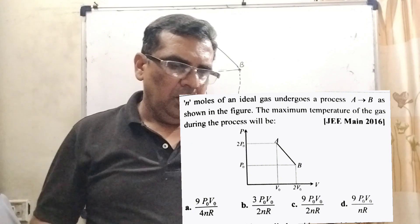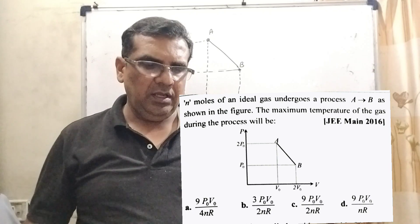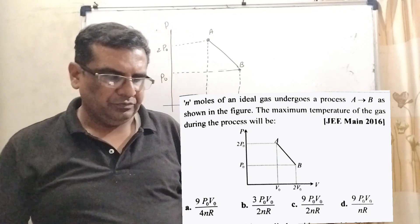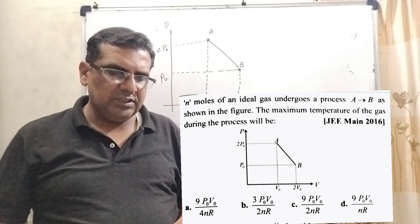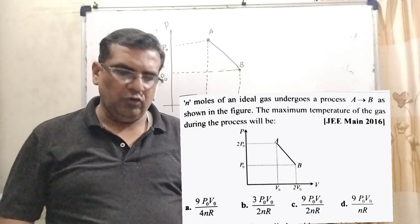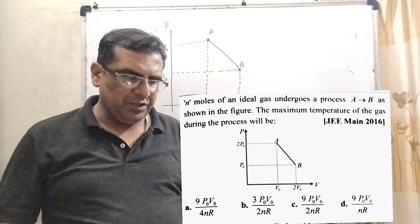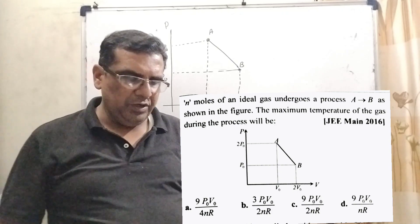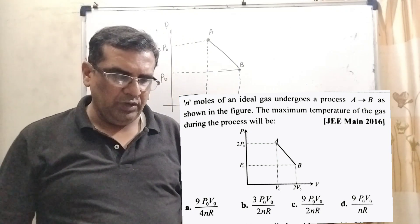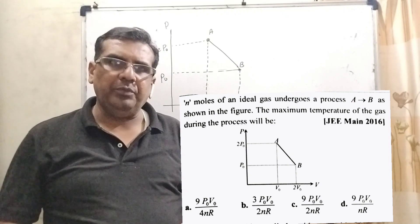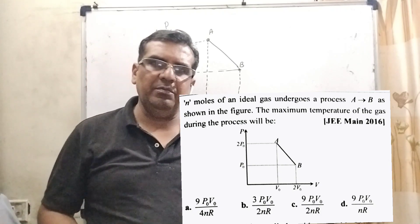Now here is the question: N moles of an ideal gas undergoes a process A to B as shown in the figure. The maximum temperature of the gas during the process will be. The four options are: Option A: 9P₀V₀ upon 4NR. Option B: 3P₀V₀ upon 2NR. Option C: 9P₀V₀ upon 2NR. Option D: 9P₀V₀ upon NR. This question is from JEE Mains 2016.